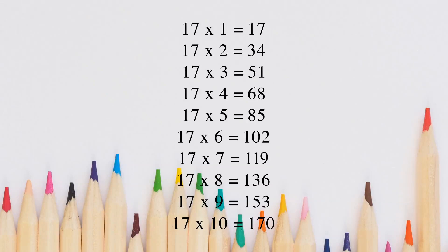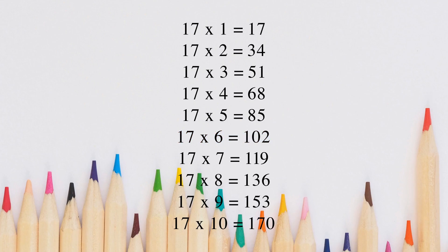Let's repeat. 17 1s are 17. 17 2s are 34. 17 3s are 51. 17 4s are 68. 17 5s are 85. 17 6s are 102. 17 7s are 119. 17 8s are 136. 17 9s are 153. 17 10s are 170.